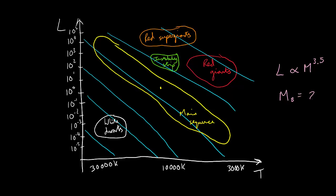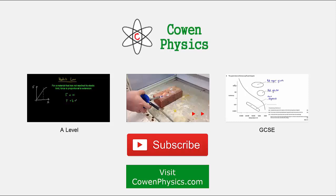For example, if star B is twice the mass of star A, how many times bigger will its luminosity be? Well, its luminosity will be 11.3 times the luminosity of star A.